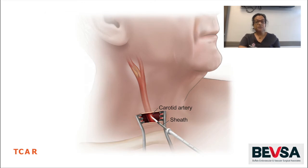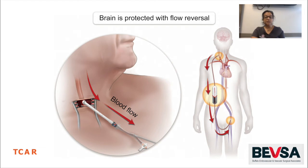Next, a specialized sheath the size of a straw is placed through the puncture into the carotid artery, done under direct vision. This allows us to get pictures of the blood flow and confirm the amount of narrowing in the carotid artery, and after that we can put a stent through it. The same tube placed in the carotid artery is now connected into the vein in the leg, and the reversal of flow is started. This allows blood to travel from the carotid artery through a filter into the leg, maintaining blood flow during surgery and minimizing the risk of any plaque debris traveling up into the brain and causing a stroke as we place the stent.